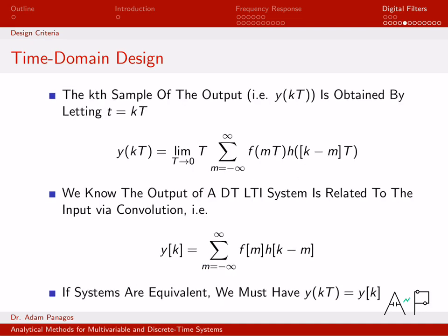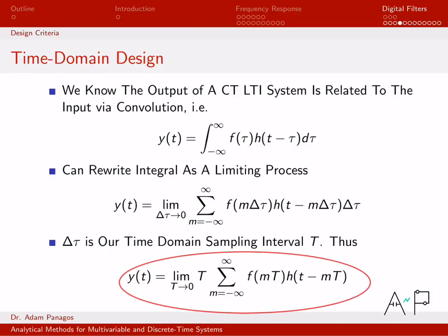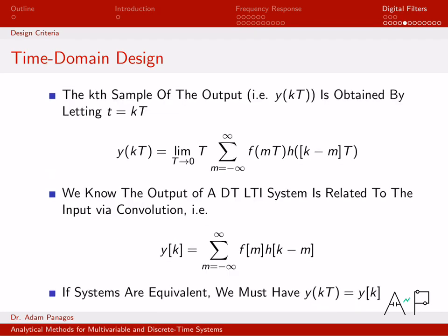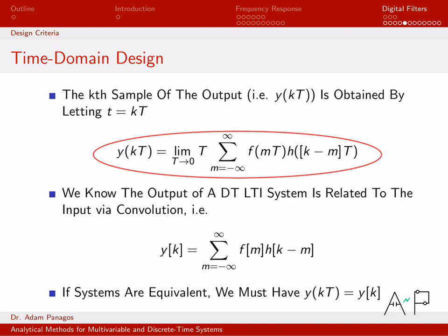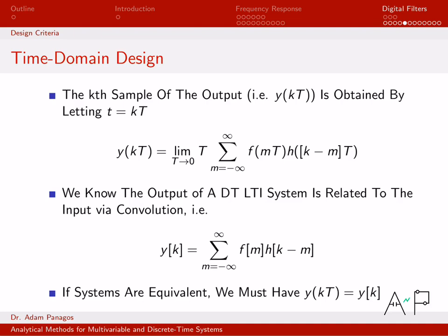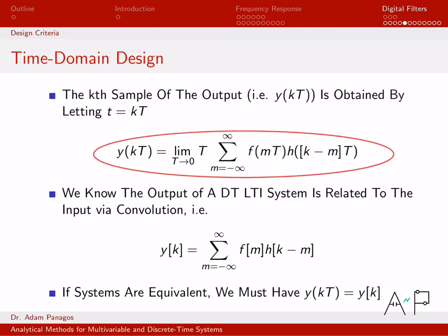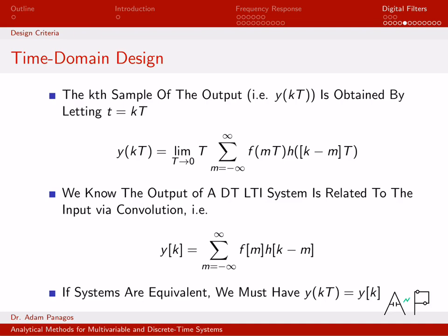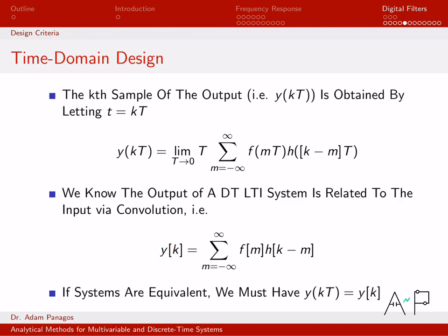Let's write that down and then sample the continuous time signal. The signal was a function of continuous time little t. If I sample it, I replace little t with k·capital T. Since there was already a capital T, I can factor out that common term, giving an analytic expression for the output of my continuous time system sampled at multiples of kT — a discretized version of the continuous time signal.